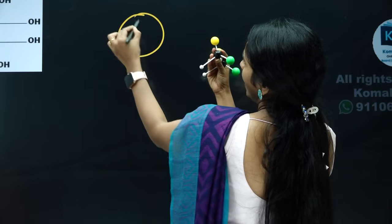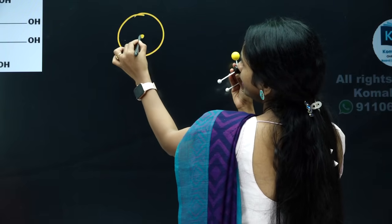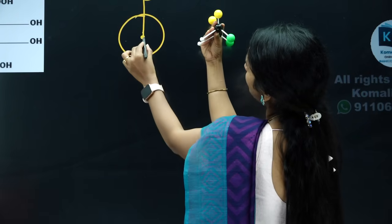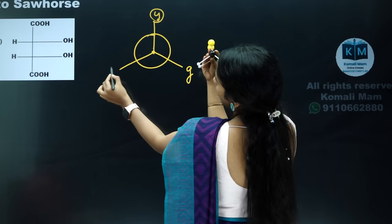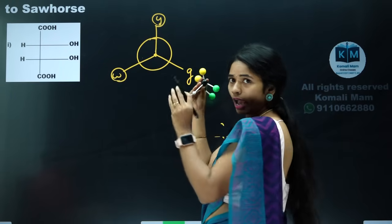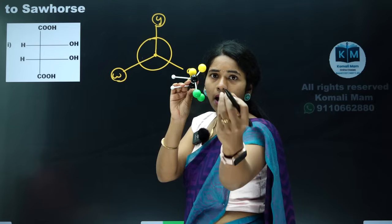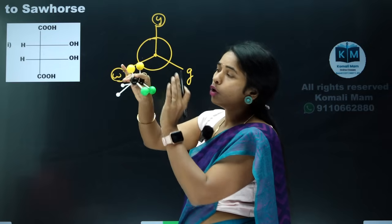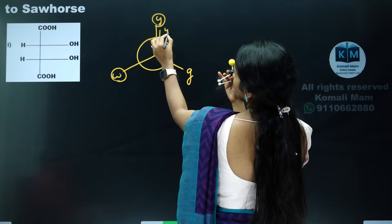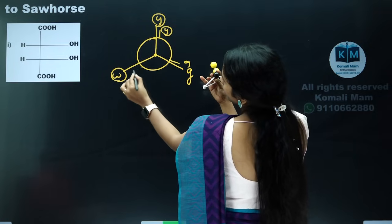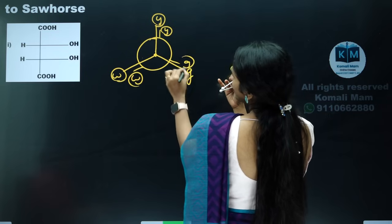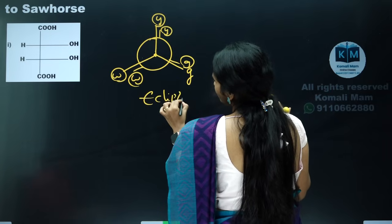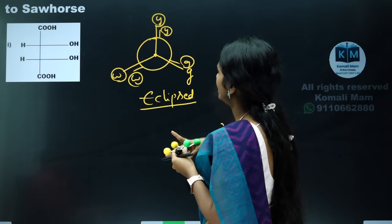In a Newman projection: the front carbon is represented by a dot with three groups — yellow ball, green ball, white ball. The back carbon is hidden so we represent it with a circle, and write its three groups — yellow, green, white — around the circle. When the groups on the front and back carbon are exactly aligned, we call it an eclipsed form — both groups are exactly coming close to each other.